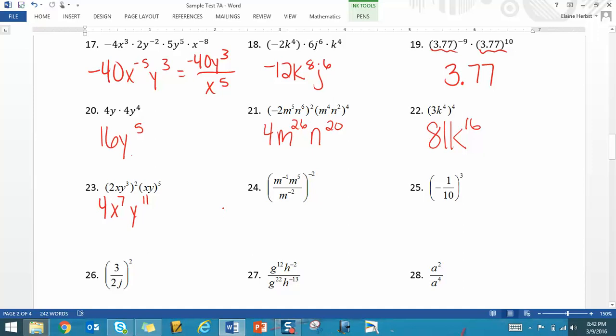So we get m to the second, m to the negative tenth all over m to the fourth. We add our exponents on top. That's m to the negative eighth over m to the fourth. And then you can think about it. There's two different ways. You can subtract. Negative 8 minus 4 is negative 12. So you would get 1 over m to the twelfth.